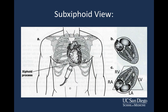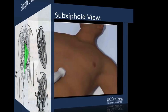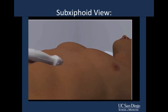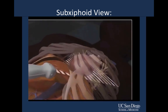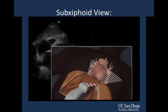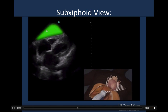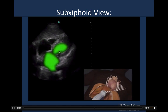Here's a diagram demonstrating that concept. The xiphoid process is the inferior aspect of the sternum, and you place your probe in that area with a nice flat angle, aiming up towards the left shoulder to get a nice view of the heart. In the video, you'll see the beam initially go through part of the liver — giving you a good window — and then slice through the heart to get a four-chamber view: right ventricle, right atrium, left ventricle, and left atrium.